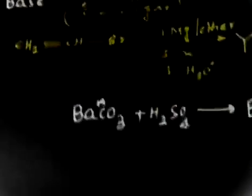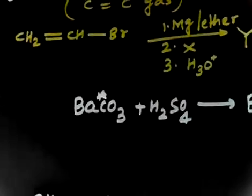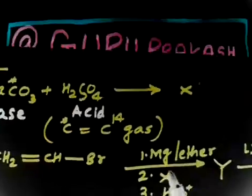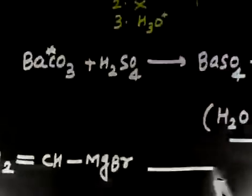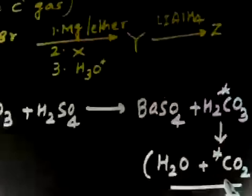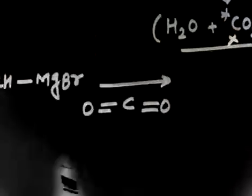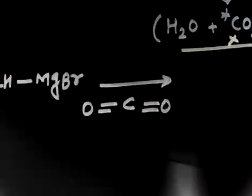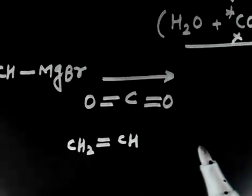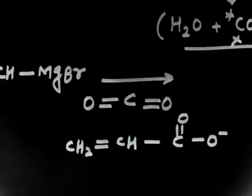In the next step, a Grignard reagent forms: CH2=CHMgBr. Now if this reacts with X, which is CO2, the Grignard attacks the CO2. So you will have CH2=CH — C=O with one O minus. X is CO2.